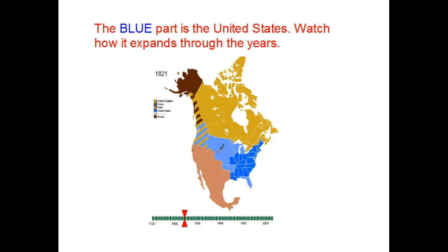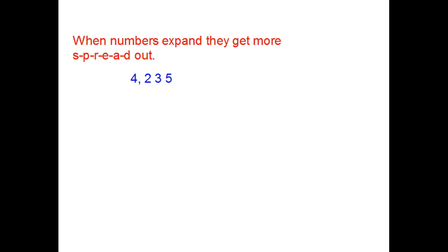If we kept going, you would eventually see that it's going to get filled up. All of the land, all the way to the Pacific Ocean. We're going to end up getting Texas. We're going to end up getting California. So, let's move on. When numbers expand, they get more spread out.